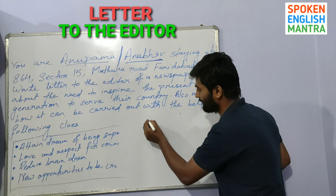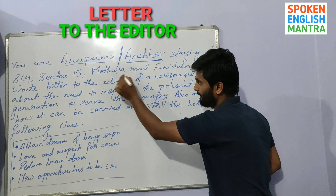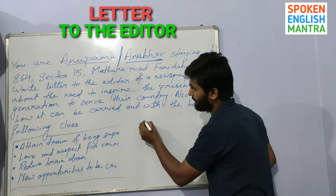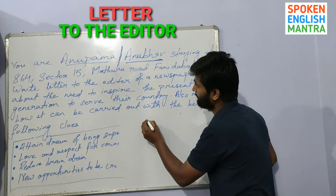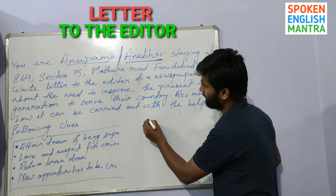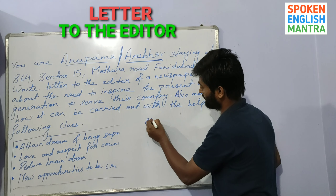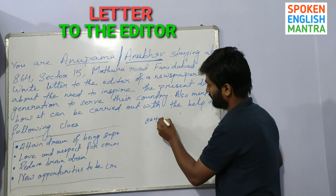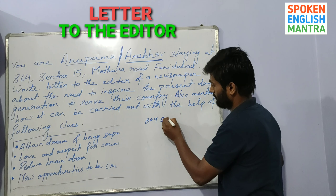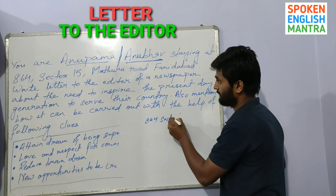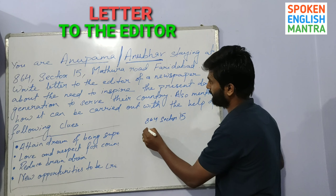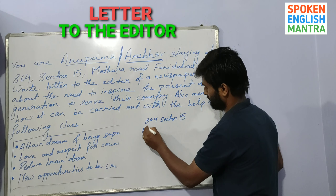Another clue is: reduce brain drain, as many people's negative thoughts need to change. More employment opportunities and positive thoughts should be created in people's minds. Incentives should be provided and new opportunities created so that the country can reach development. The last clue is: suitable positions for qualified people — like, it is wrong that uneducated people get positions over qualified ones. There should not be discrimination. So all these points are given for you to complete the letter.